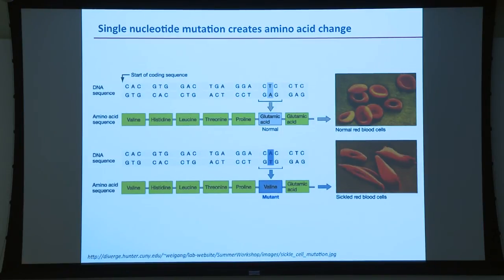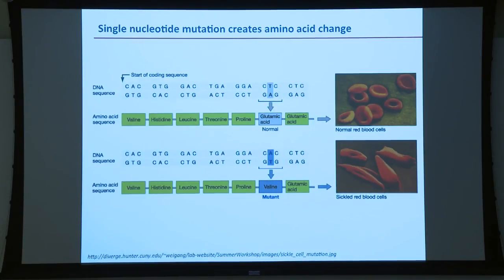We now realize this is a single mutation — it's occurred multiple times in multiple places — that changes one amino acid in the hemoglobin B gene. As a result, the red blood cells can no longer be easily invaded by malaria parasites, giving a lot of protection against falciparum malaria. However, if you have two copies of the gene, hemoglobin starts to polymerize into long strings, you get stretched-out, sickled red blood cells, and you have sickle cell anemia.